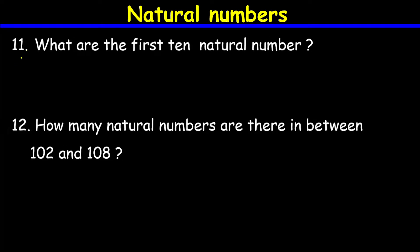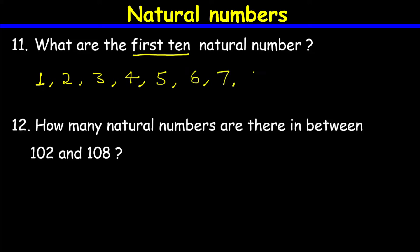Question number eleven: what are the first 10 natural numbers? The first 10 natural numbers are 1, 2, 3, 4, 5, 6, 7, 8, 9, and 10. These are the first 10 natural numbers.